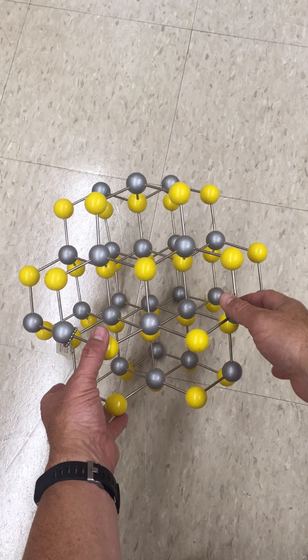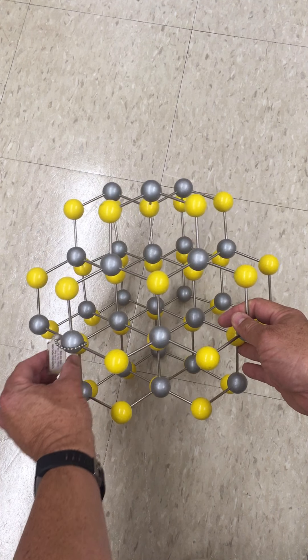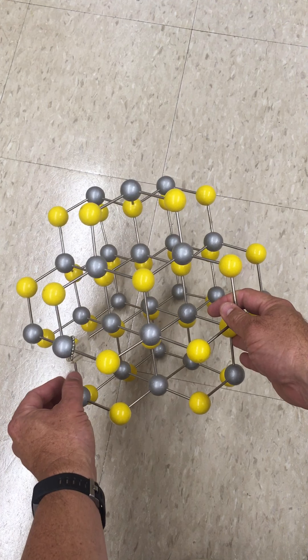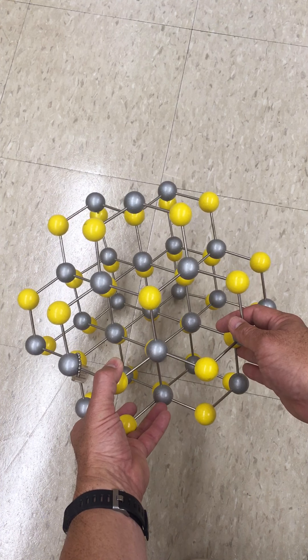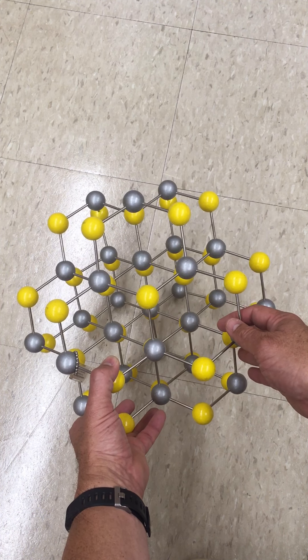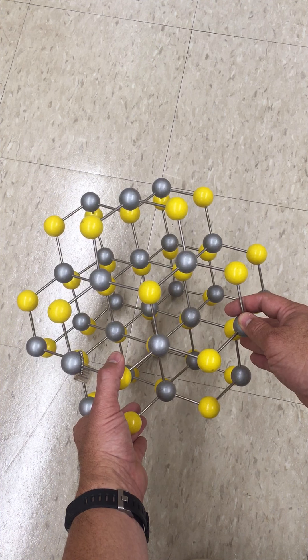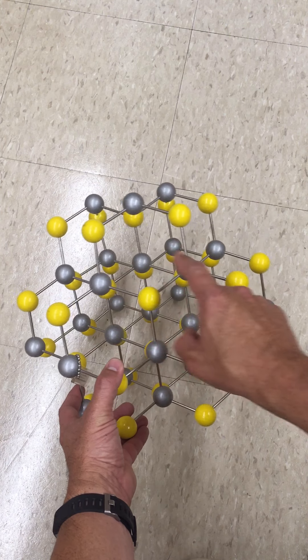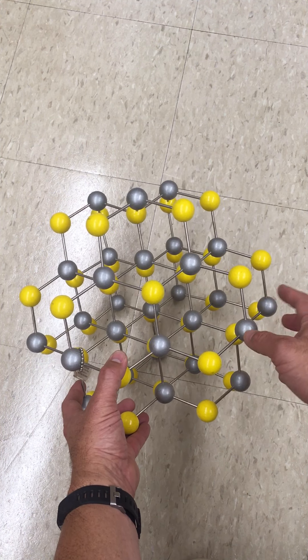What we have here is a model of the crystal structure of zinc sulfide, specifically the crystal structure zinc blend or sphalerite. Now this happens to be a sort of a cubic arrangement of the zinc and sulfur ions in this structure, where we have the gray spheres representing zinc and the yellow spheres representing sulfide.